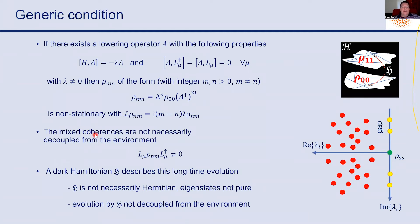Importantly, these mixed coherences are not decoupled from the environment. If we apply the jump operators to ρ_{nm}, in general we get a non-zero result — these states are not dark states. They are induced by the dissipation and are not simply states that don't interact with the environment. These conditions are different from decoherence-free subspaces; here, the long-time oscillatory evolution is actually induced by the environment.